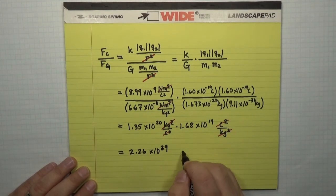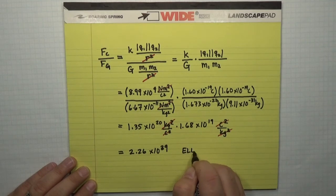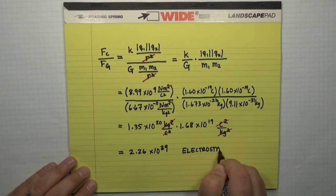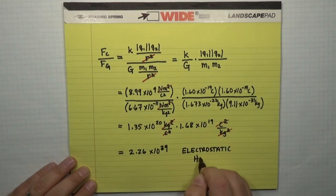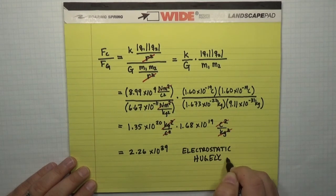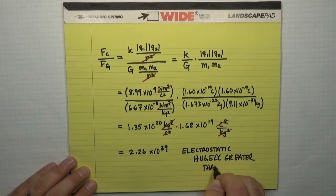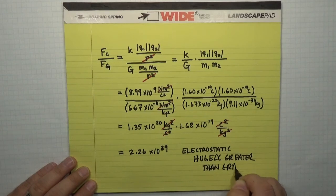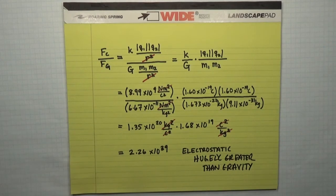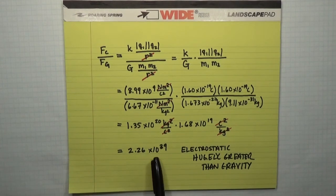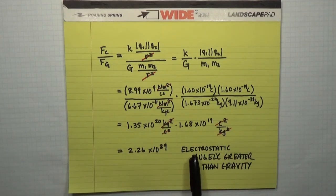That means that the electrostatic force is hugely greater than gravity. What that means is that in all problems, where we're simply considering the interactions of two charges in close proximity to each other, the electrostatic force is going to be the dominant force. We have said many times, and we will continue to say, that we're going to neglect the gravitational force because we can do a calculation like this.